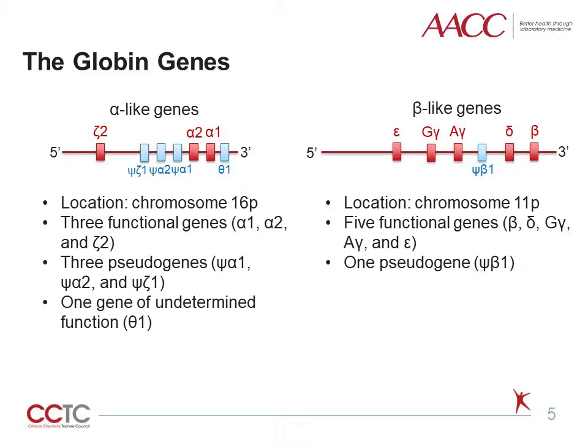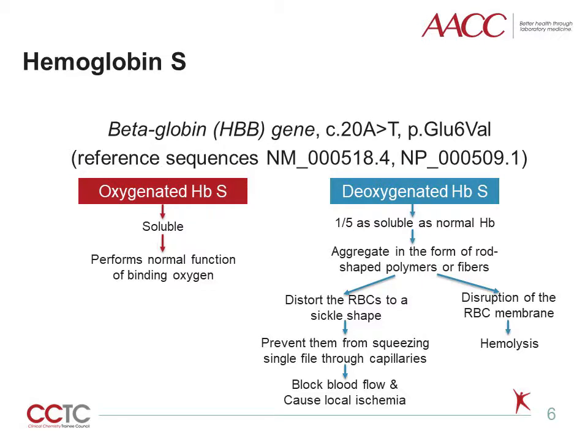Within each complex, the genes are all in the same 5' to 3' orientation and are arranged in the order in which they are expressed during development. Hemoglobin S results from a single nucleotide substitution in the beta-globin gene. An adenine-to-thymine substitution in the sixth codon replaces glutamic acid with valine at the sixth amino acid position of the beta-globin gene. In oxygenated blood, hemoglobin S molecules are normal in their ability to bind oxygen. But in deoxygenated blood, HbS is only one-fifth as soluble as normal hemoglobin, causing sickle hemoglobin molecules to aggregate into rod-shaped polymers or fibers.